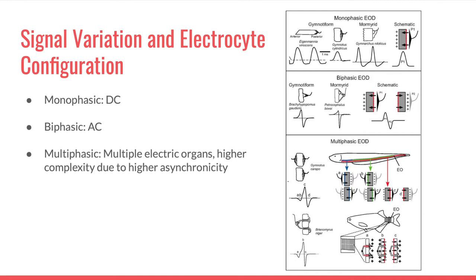In the biphasic case, membrane excitability is alternating between both faces, so the behavior is more AC. The multiphasic case is the most complex. This is due to asynchronicity not only between the multiple electric organs, but also within the pulse switch of the particular electrocyte group. The more asynchronous, the more complex, the more difficult it is for us to analyze.